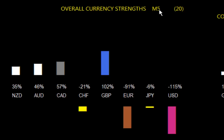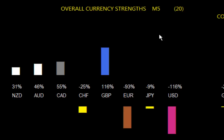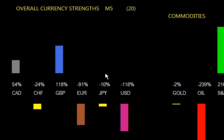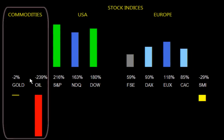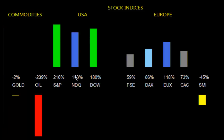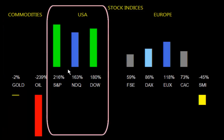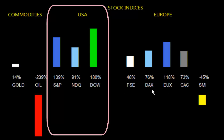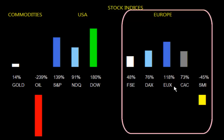We can change this to any time frame — a 5-minute, 15-minute, 1-hour, 4-hour — or a combination of three time frames. Then if we look to the right, we have commodities in gold and oil, and to the right of that, we have the main US indices: the S&P 500, the NASDAQ, and the Dow. Then in Europe, we have the FTSE, the DAX, the Eurostoxx, the CAC, and the SMI.